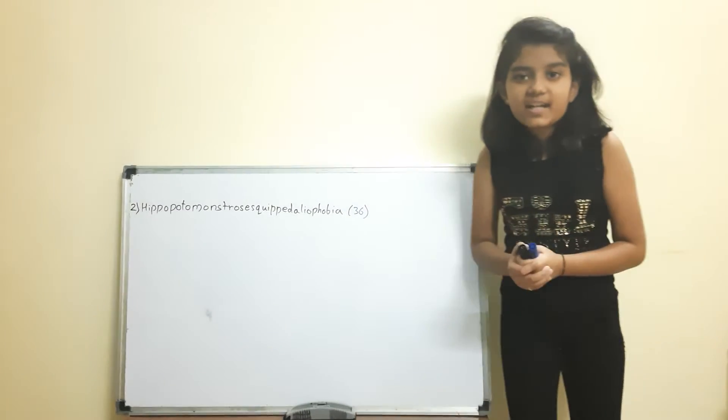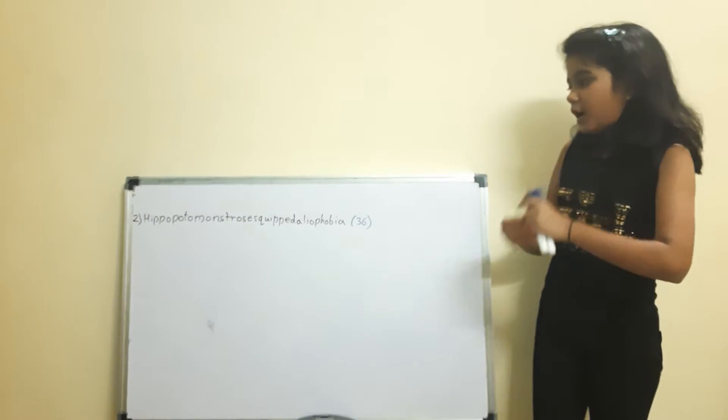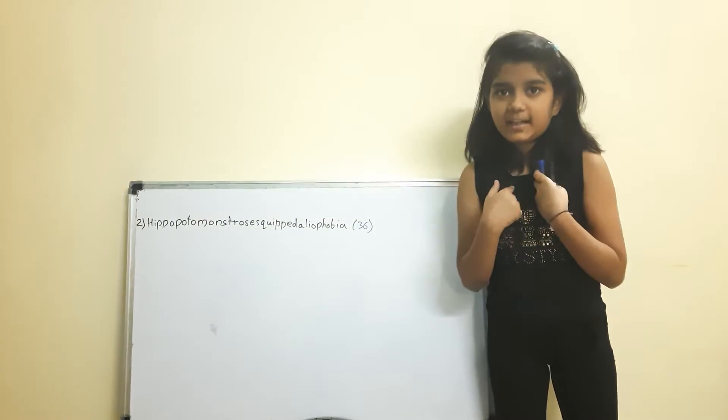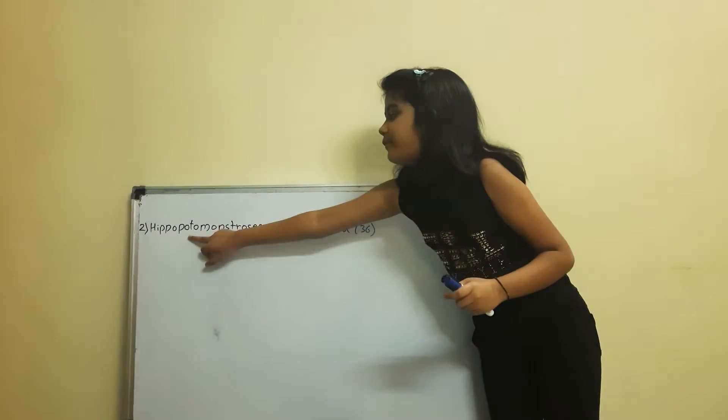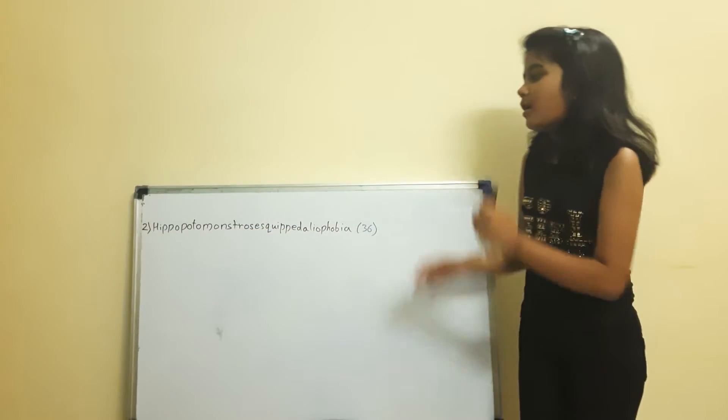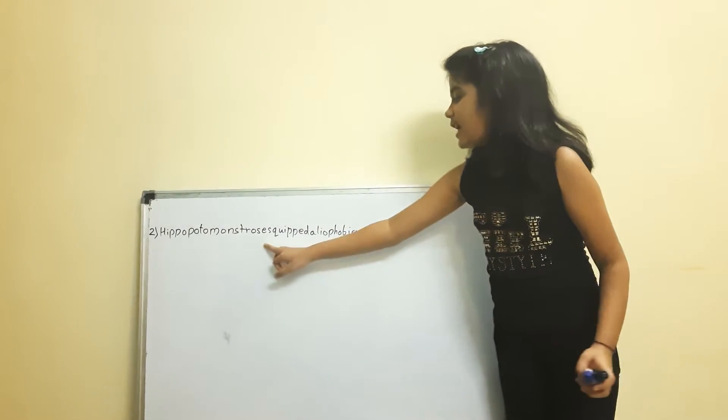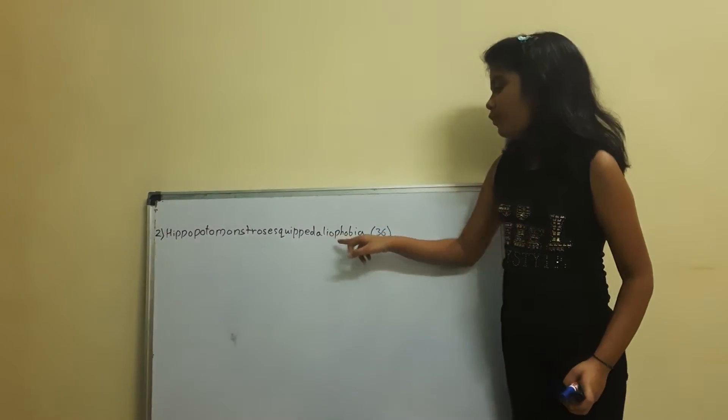Now, you know how to pronounce it? It is like you have to take my secret that I told you earlier. So, first you have to say Hippo, then Poto, then Monstrosis-Quibdeliophobia.